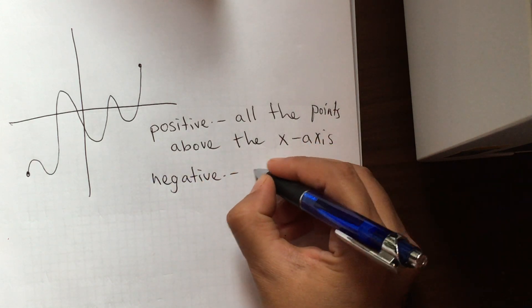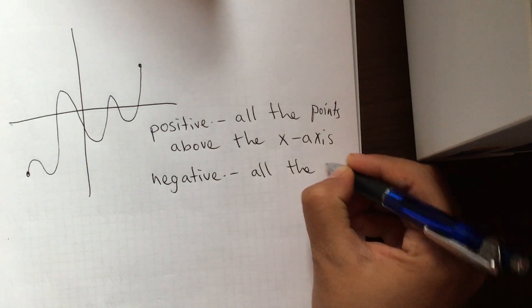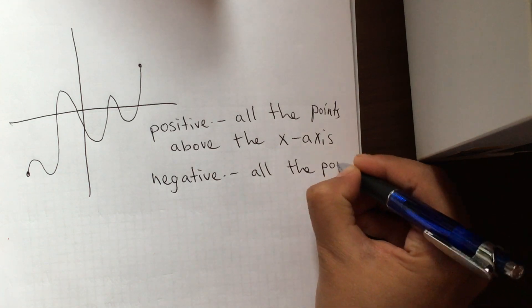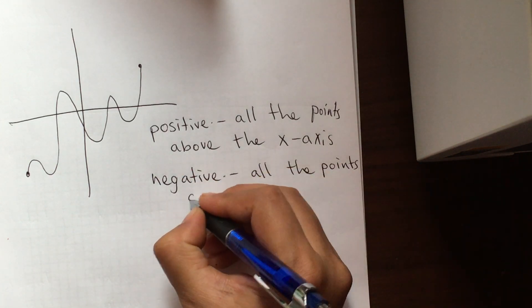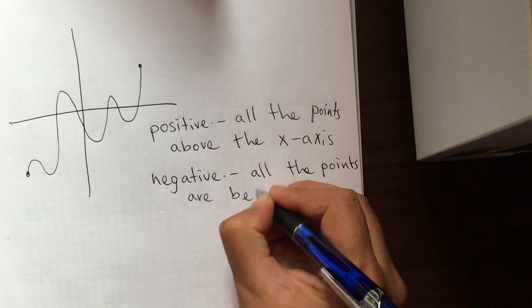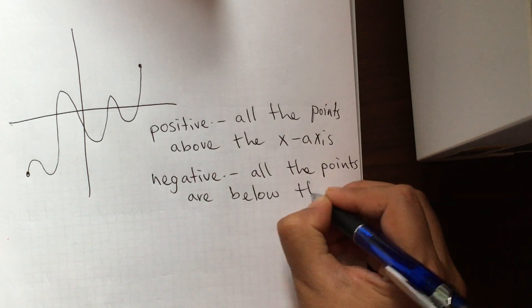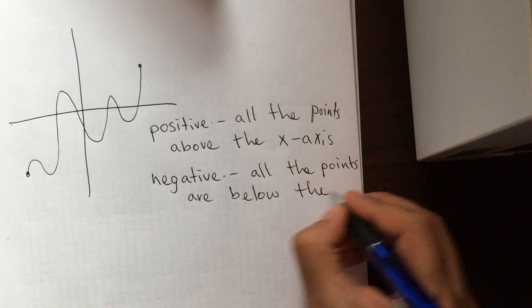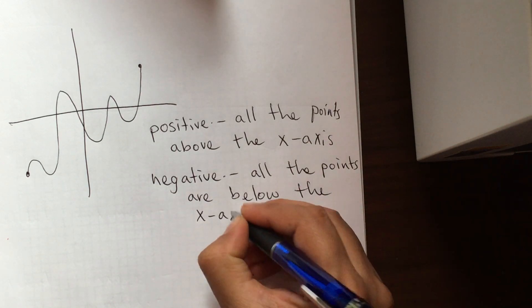And the graph is negative when all the points are below the x-axis.